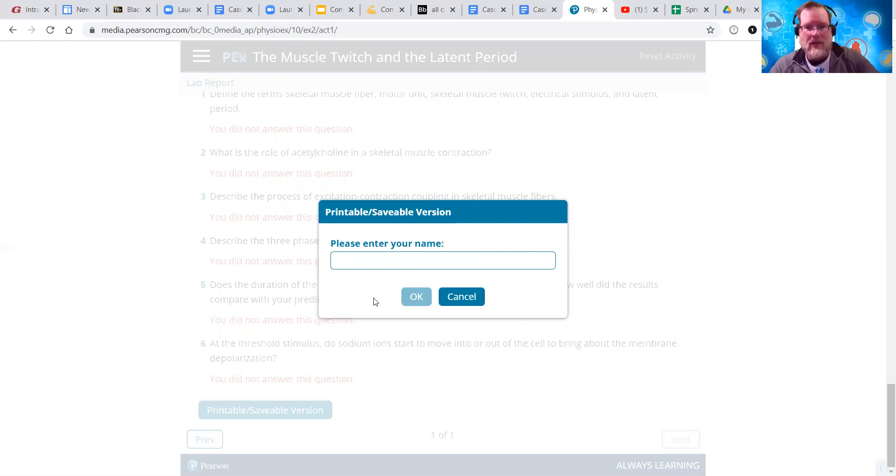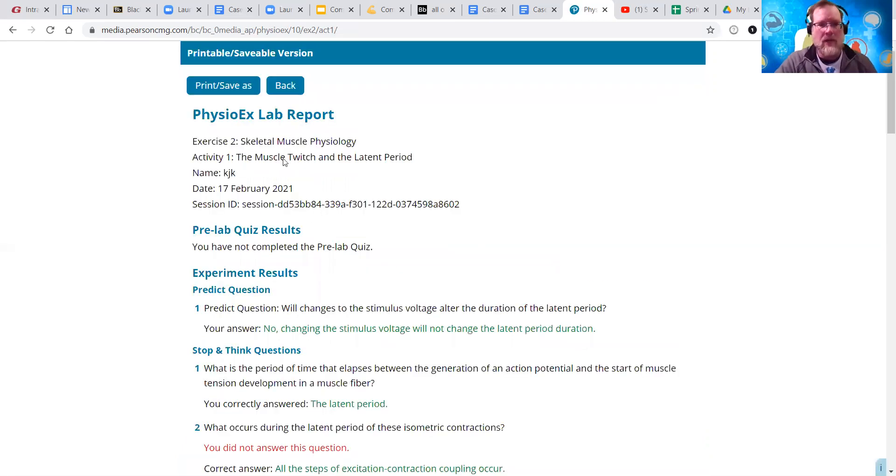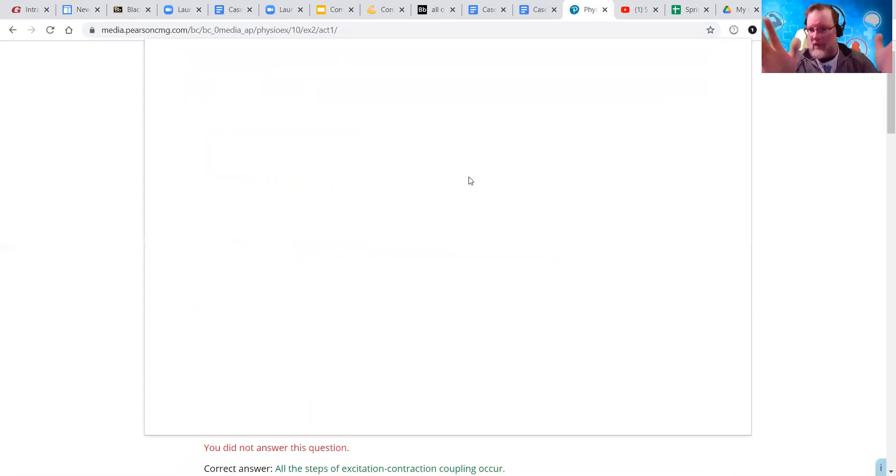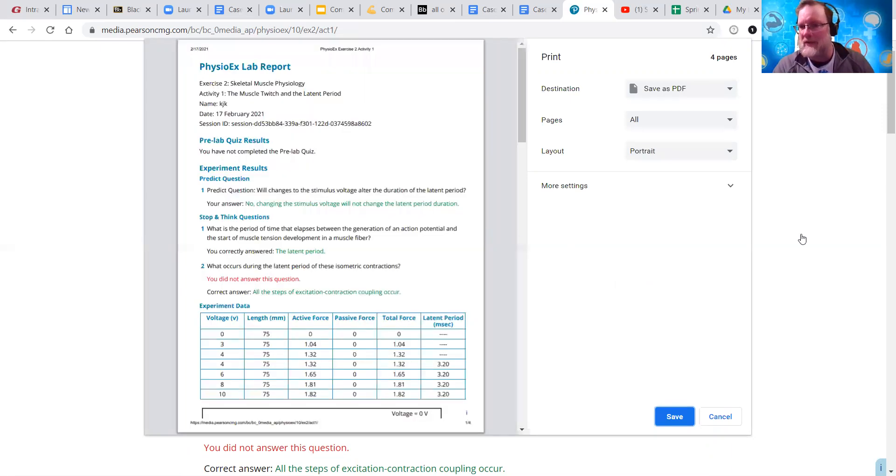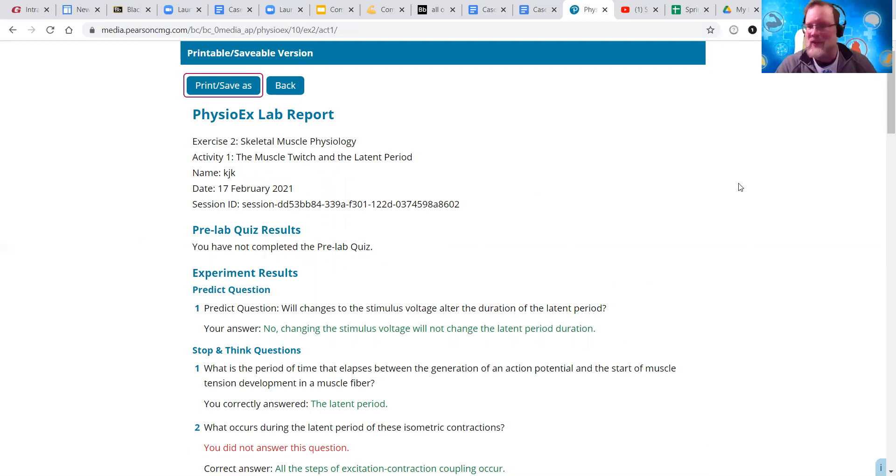And then type your name. And okay. And then again, hit print, save as. This is where the pop-up blocker comes into play. If nothing happens when you click that, you need to enable your pop-up blocker. So, right there, save as PDF. And then click save, and you're done. If you have questions, send me an email. I'll get back to you, and we'll figure it out.